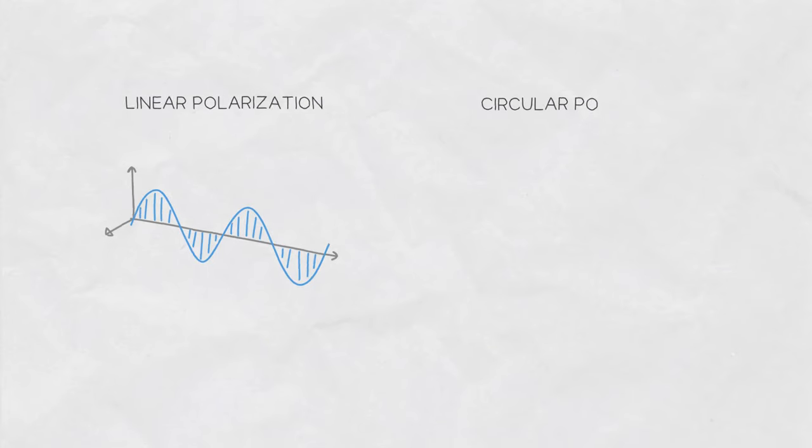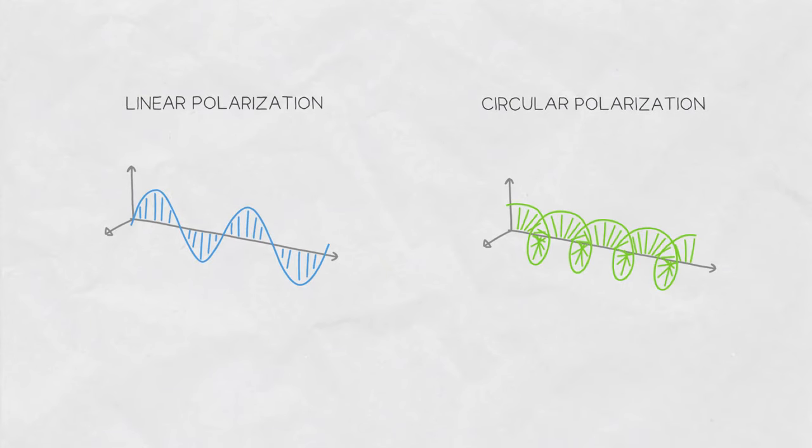That means that the field of the transmitted signals are changing in a line. The vast majority of antennas for WISP networks are linearly polarized. To achieve the best results, antenna polarizations must match.